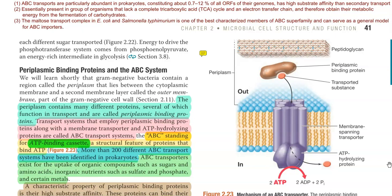And therefore, these organisms obtain their metabolic energy from the fermentation of carbohydrates. So other nutrient requirements can be easily met with the help of the ABC transport system.